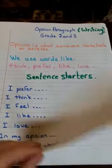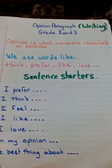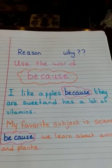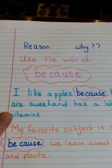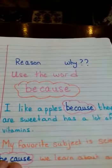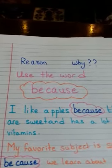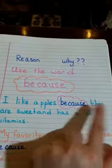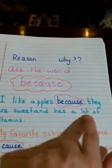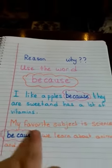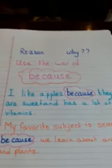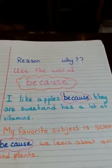Now, when we want to write an opinion, we must state a reason why this is our opinion. To write your reason, you use the word 'because.' For example: 'I like apples because they are sweet and have a lot of vitamins.' Or: 'My favorite subject is science because we learn about animals and plants.' So the word 'because' helps us state our reason.